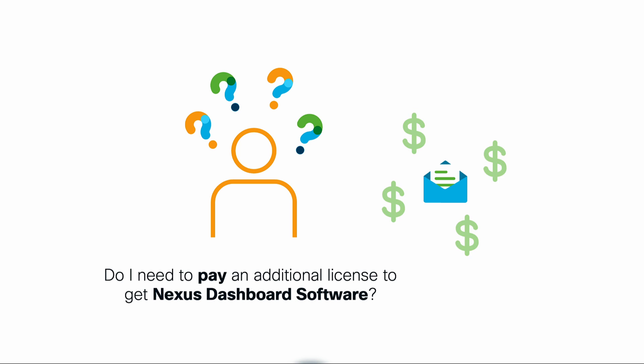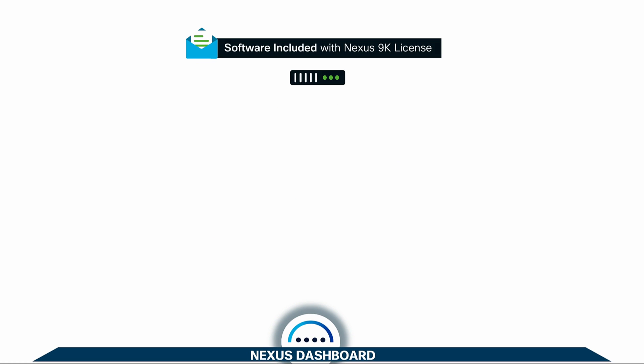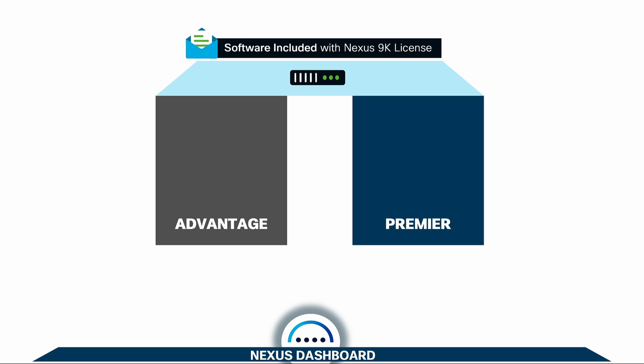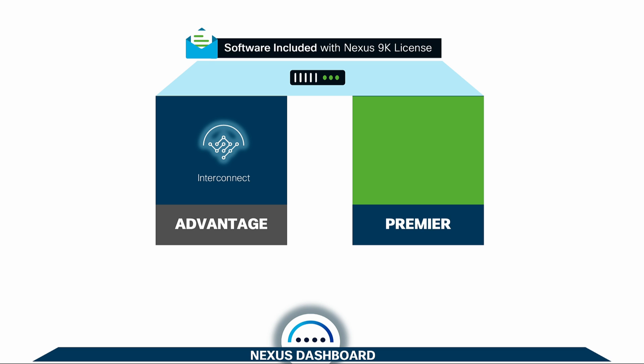But you might be wondering — do I need to purchase a separate Nexus Dashboard license? The answer is no. Nexus Dashboard software is free of charge if you have Advantage or Premier subscription licenses on your Nexus switches. If you have an Advantage license today, you are entitled to use Nexus Dashboard software with data center and cloud interconnect capabilities, substituting what you would previously do with Multi-Site Orchestrator or MSO. If you have Premier licenses instead, you will have DC and cloud interconnect functionalities plus Insights, which refers to the automated correlation and smart analytics functions previously covered.